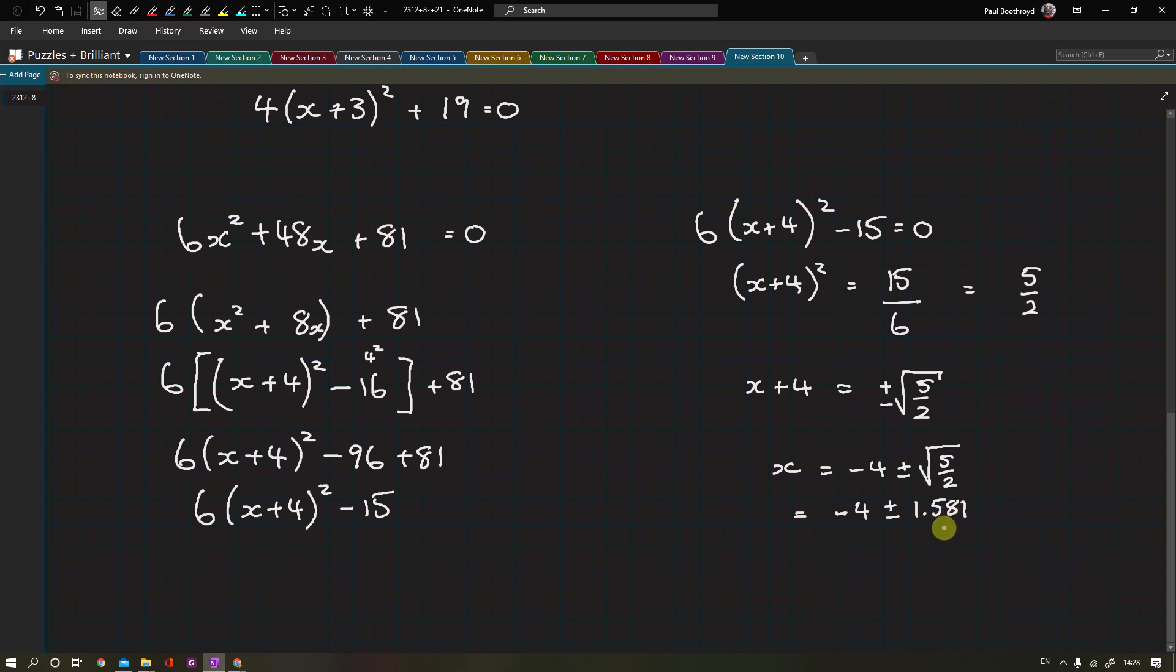Do keep this more accurate than the three significant figures in your final answer. So -4 - 1.581 is -5.58.